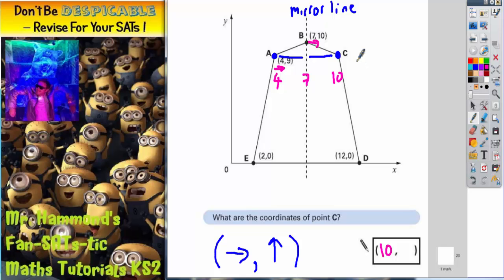Now the question is, how far up is point C? Well, point C, if you start on the bottom line, which is the zero line, you go up to point C. Point C is level again with point A.